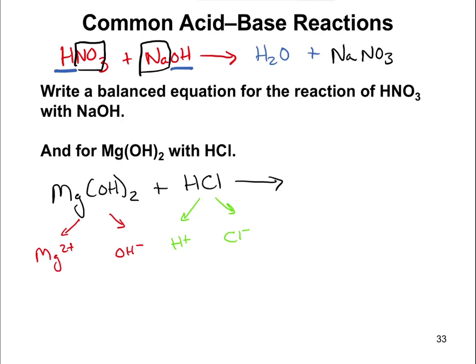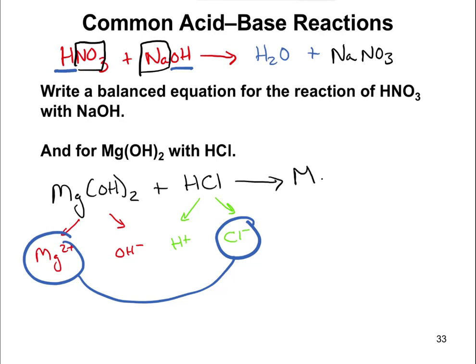Now, what happens when this reaction occurs? Like I said before, you're going to trade partners. The plus that was over here goes with the minus over here. So we're going to form magnesium chloride, and it's going to be MgCl2 — we need a 2 for the chlorine because it has a negative 1 charge and we have to balance the charges. And then the other thing that's going to form is water, H2O.